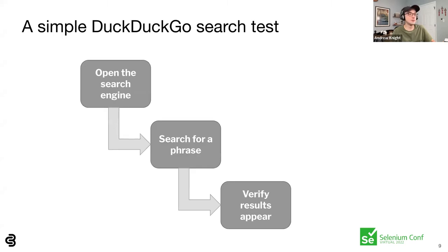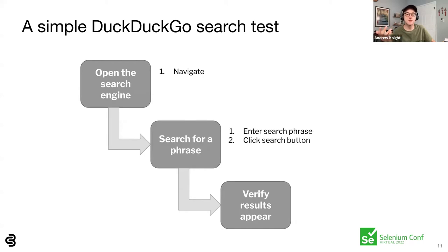Here's an example of a basic search engine test for DuckDuckGo. The steps are fairly straightforward. Opening the search engine requires navigation. Searching for a phrase requires entering keystrokes and clicking the search button. Verifying results requires scraping the page title and result links for the new page. As you can see, interactions are everywhere.